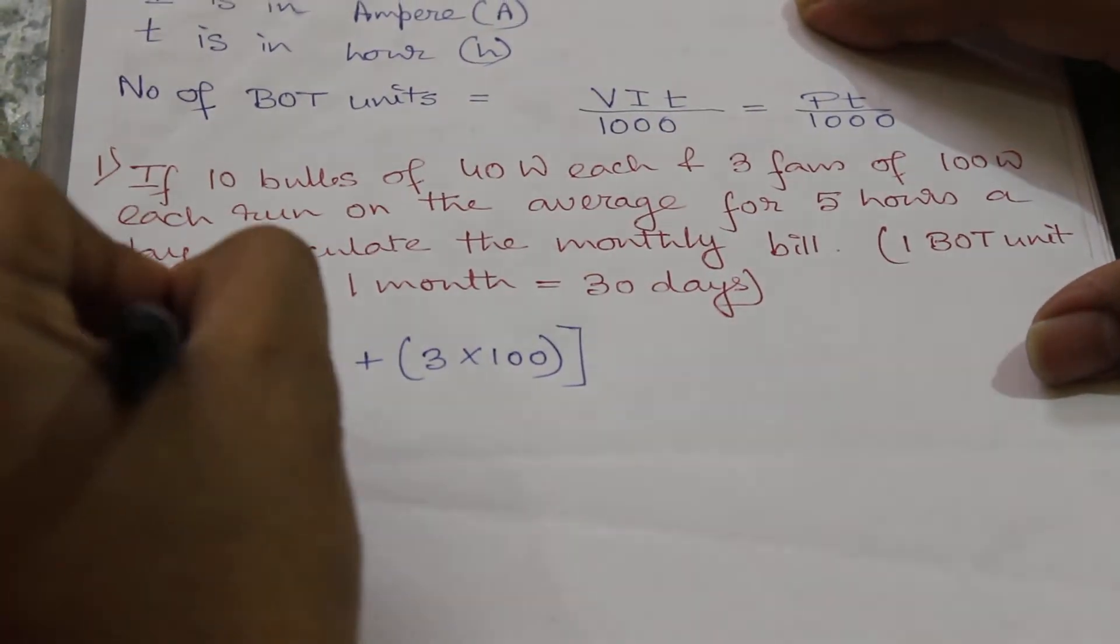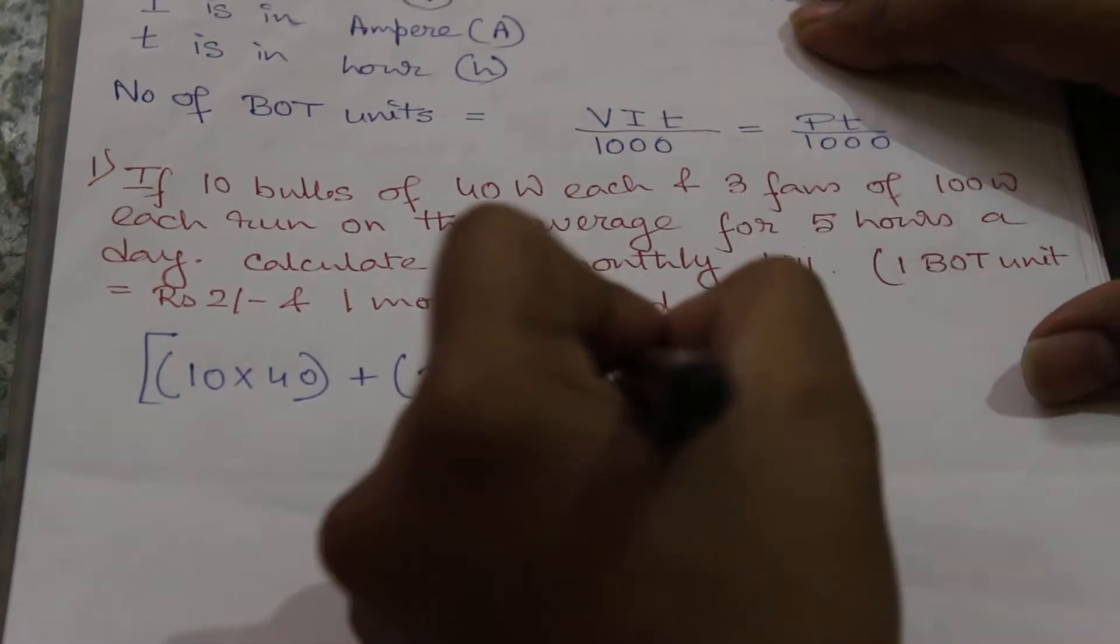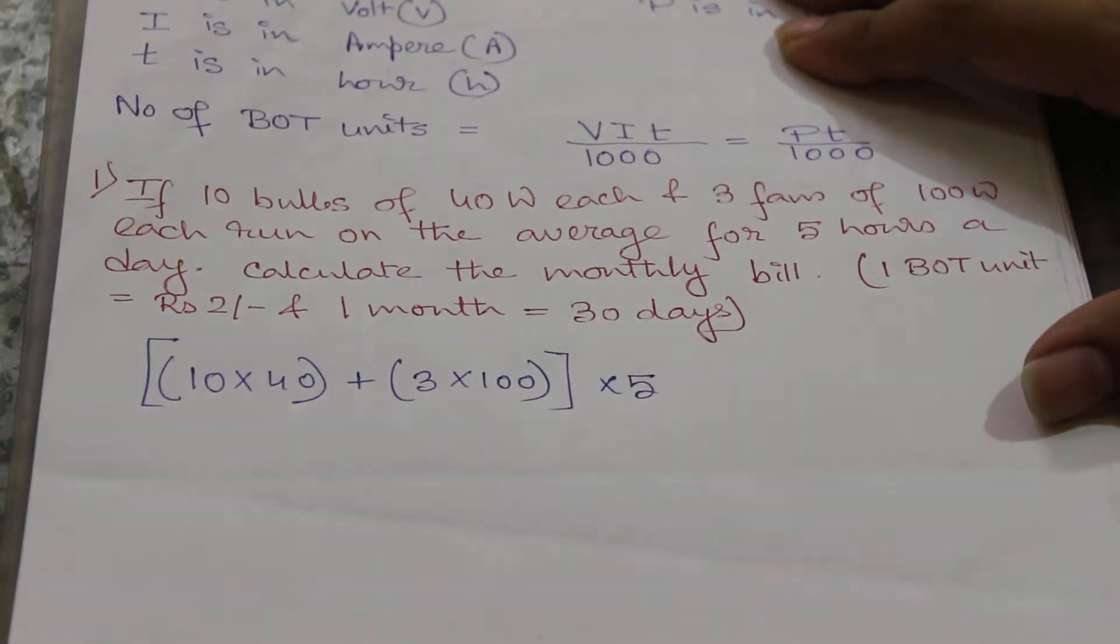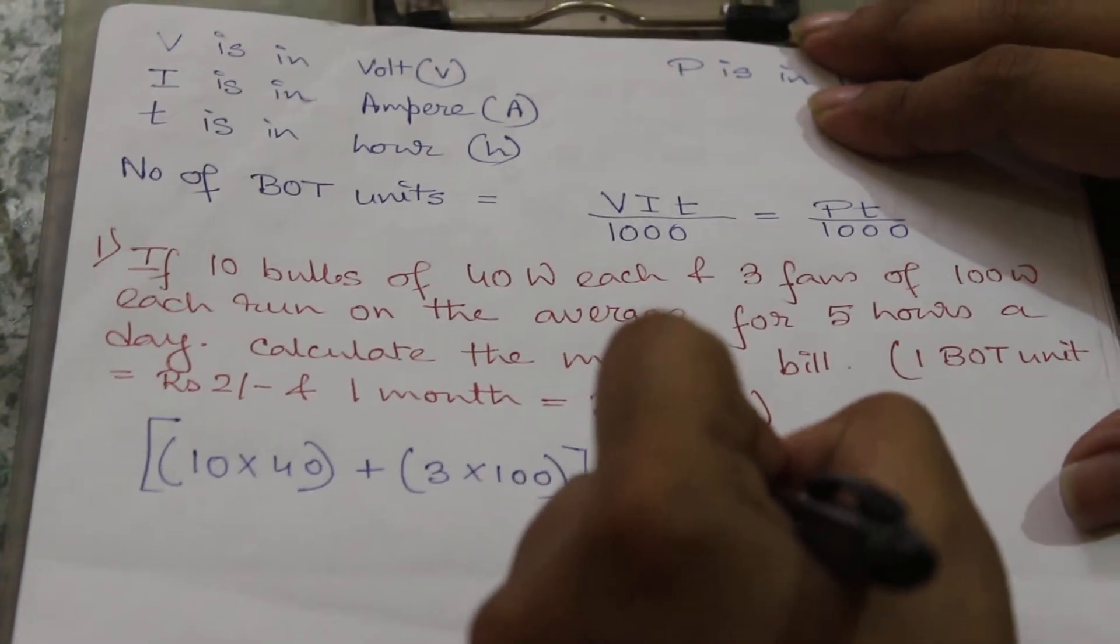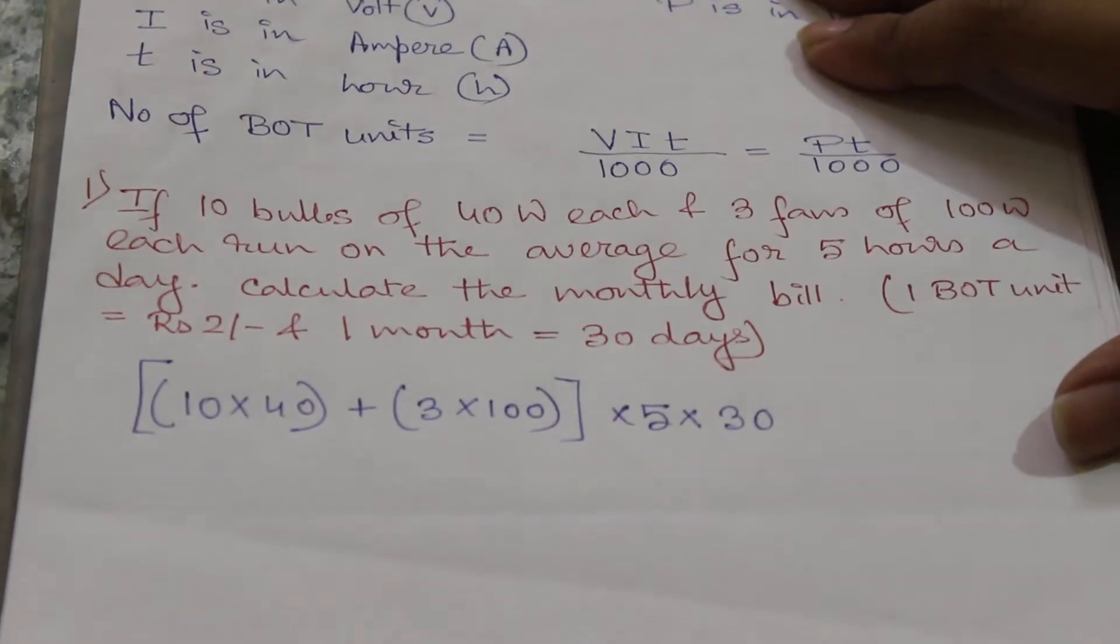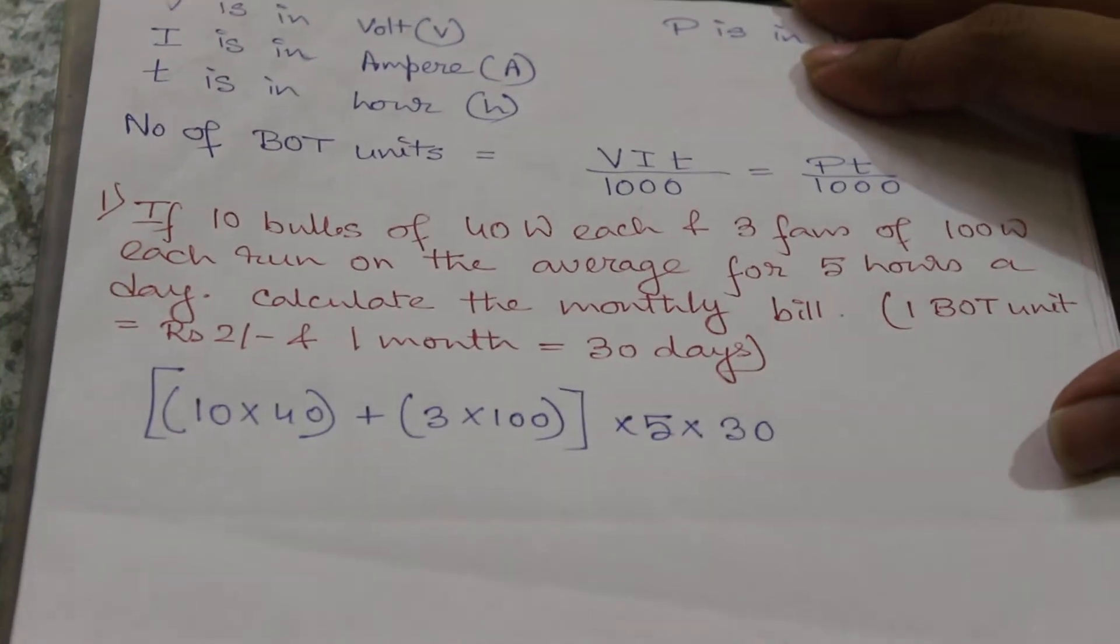Now it runs 5 hours a day. Number of hours will be multiplied with it. And a month consists of 30 days. So this will be the total wattage.